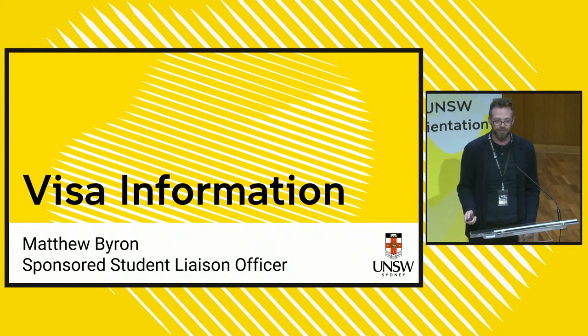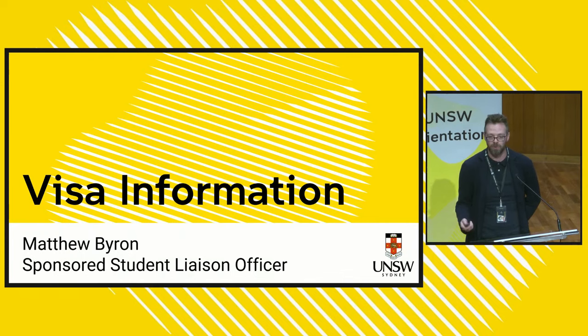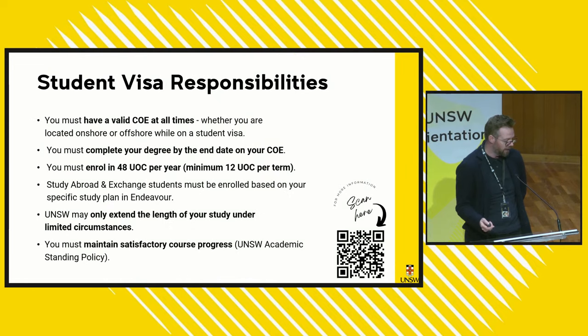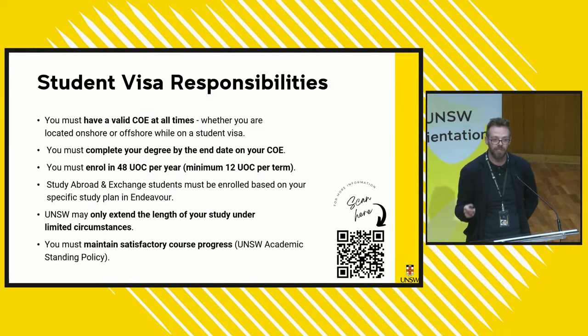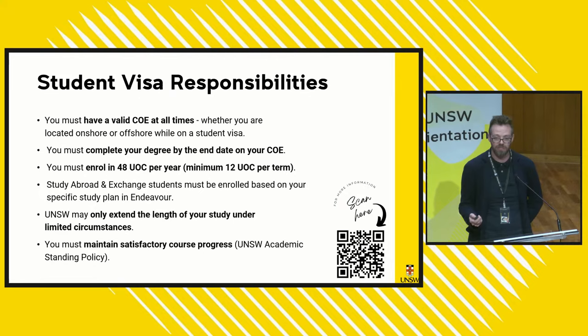Thanks very much, Nicole. Hello everyone, good afternoon. I work within the student compliance team and the information I'm going to give you today is particular to your student visa — different rights, responsibilities and things you need to be aware of while you're here on study. The main thing you need to know is that you all have a COE, a Confirmation of Enrolment, and you need to have a valid COE at all times. The COE contains information about what you're studying — the program code, the duration of study, and when you're expected to complete your studies.